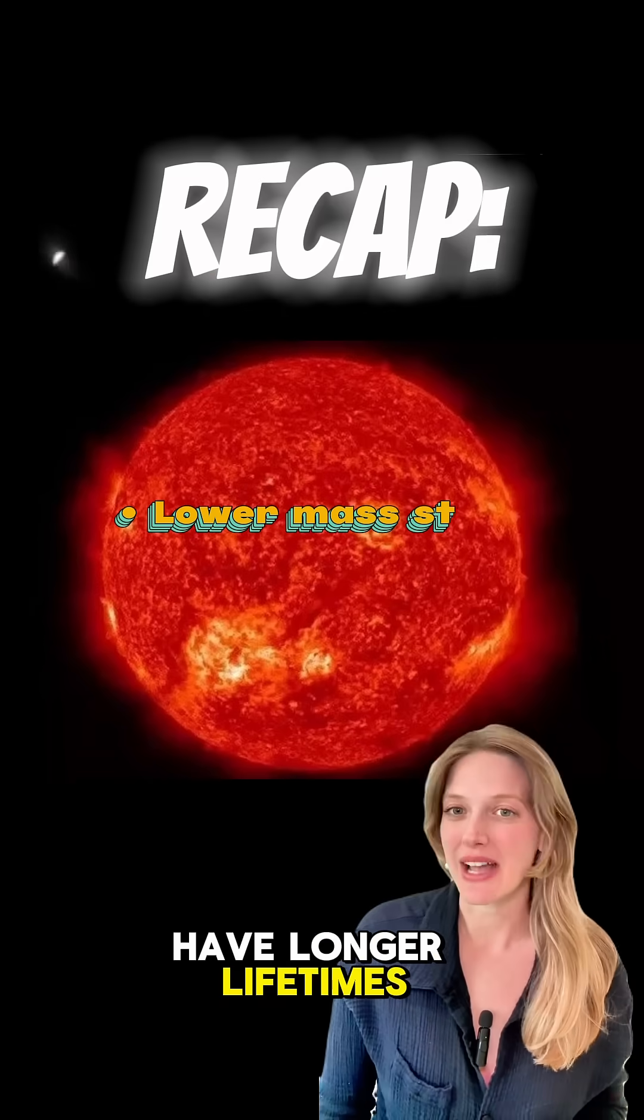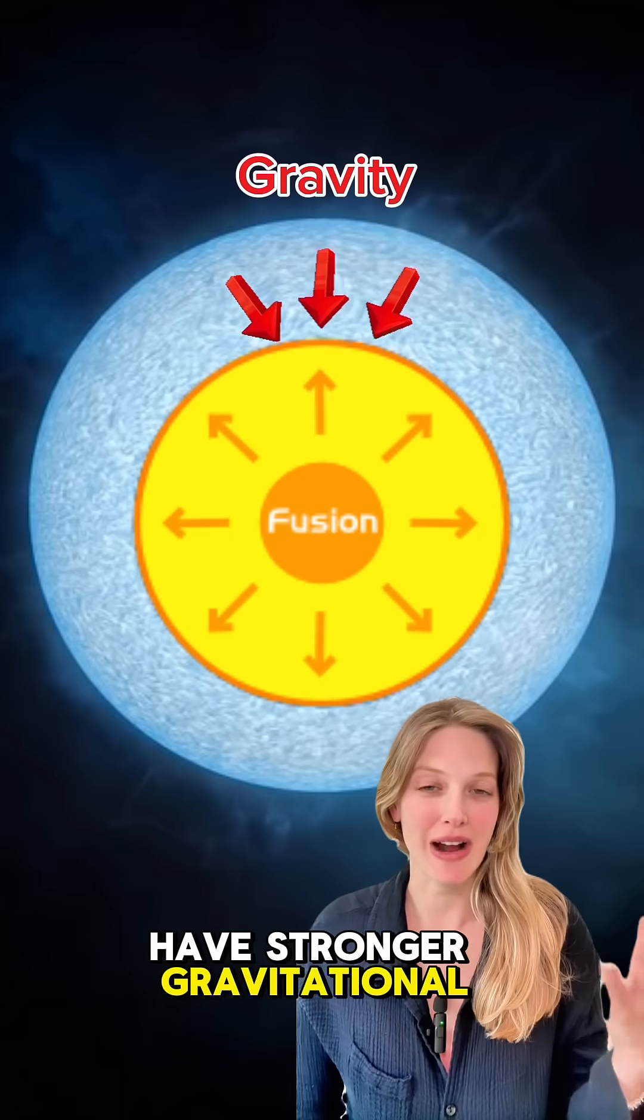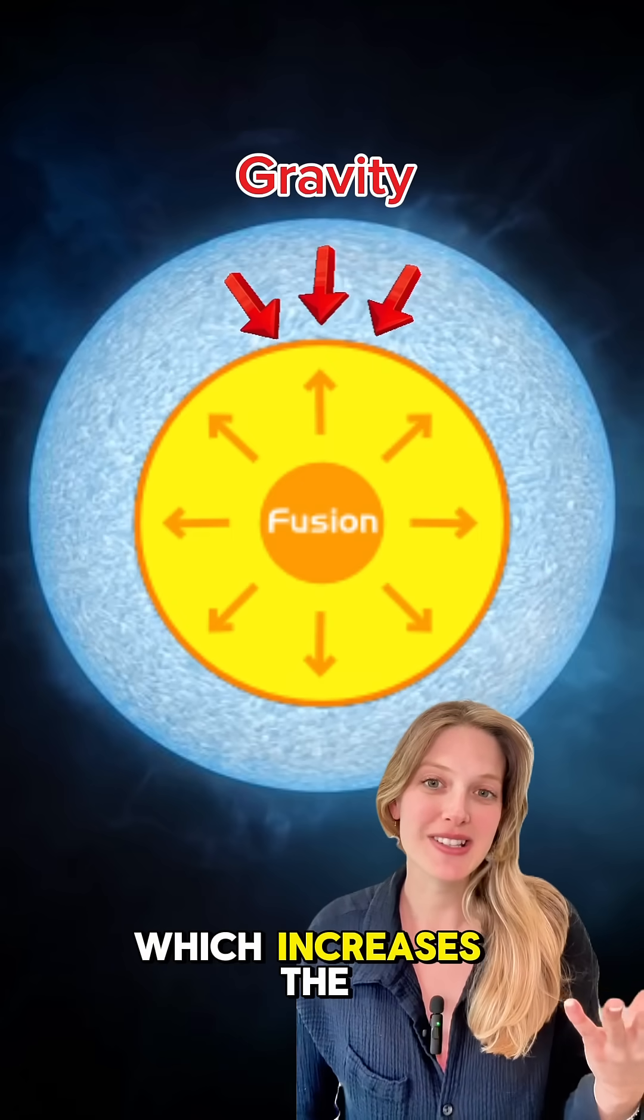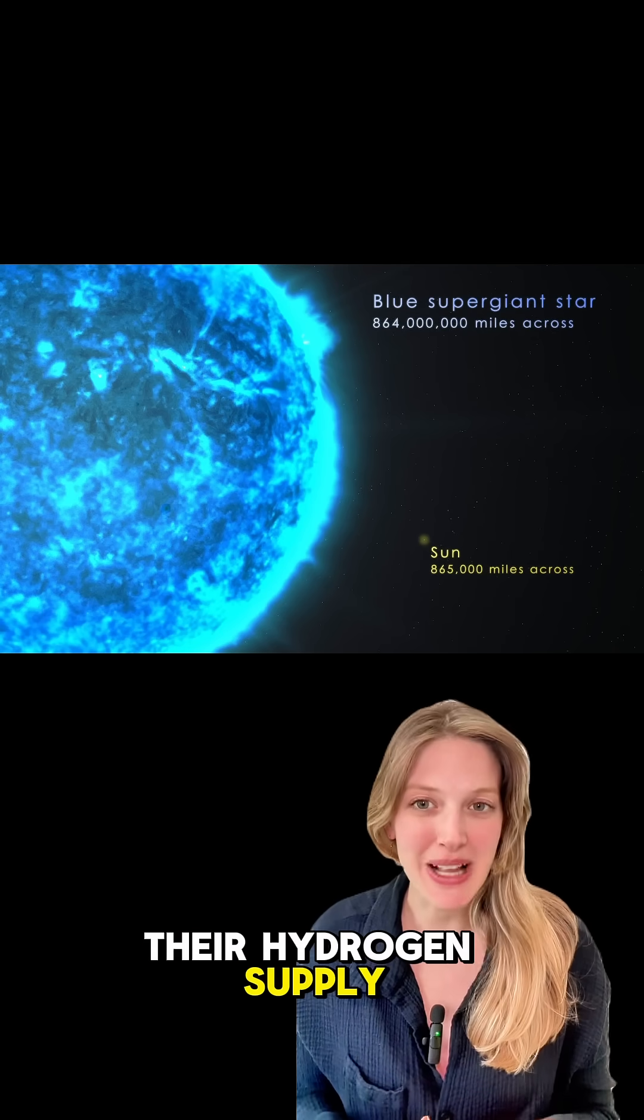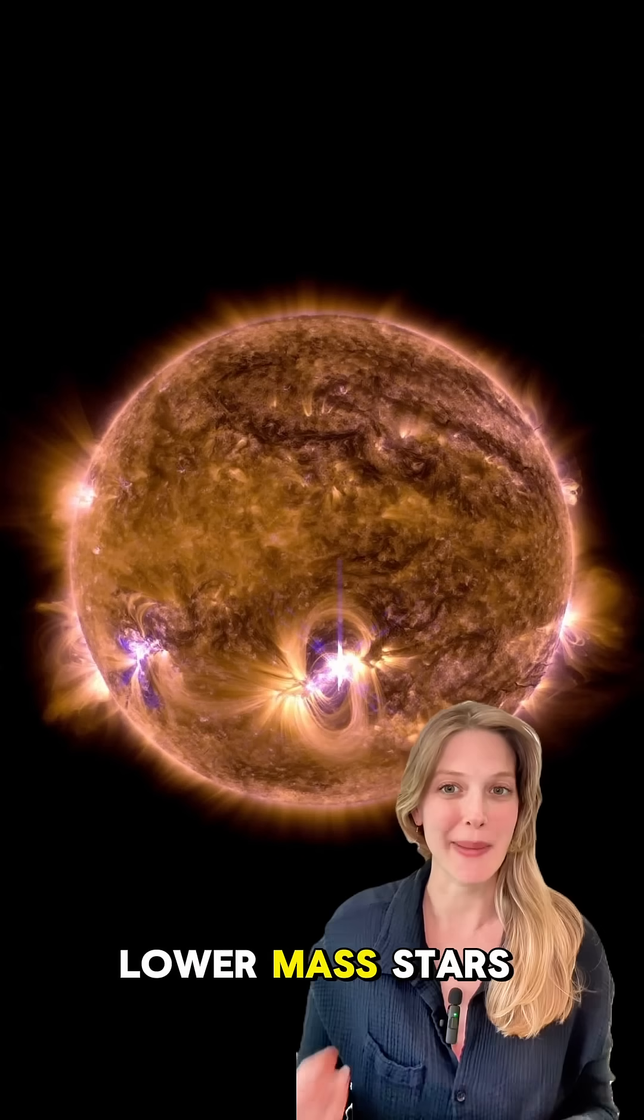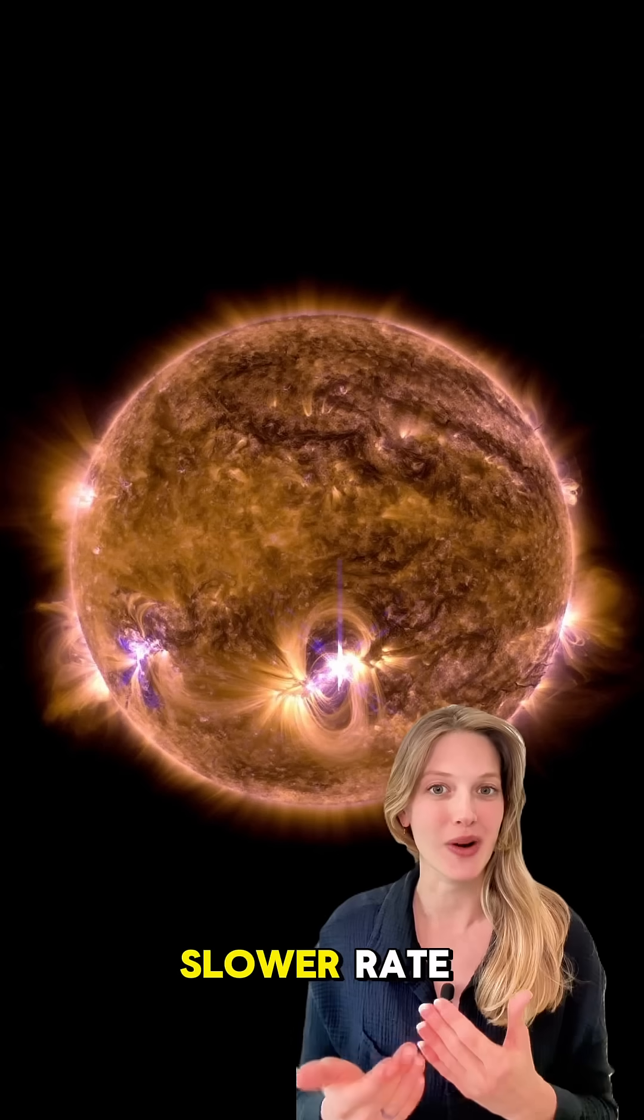Lower mass stars have longer lifetimes because they burn their nuclear fuel more slowly. Higher mass stars have stronger gravitational pressure, which increases the core temperature and fusion rate. This causes them to burn their hydrogen supply much faster than lower mass stars, which have a lower core temperature and consume fuel at a much slower rate.